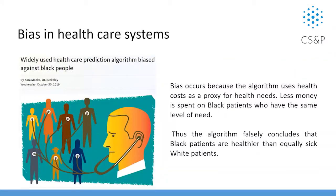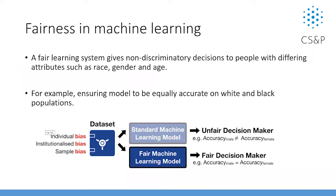We also have examples in healthcare systems. Bias normally occurs in health needs — less money is spent on black patients who have the same level of need. That's another issue with unfair machine learning prediction models in care systems. We hope that a fair learning system gives no discriminatory decisions to people, regardless of gender, age, race, or other attributes.